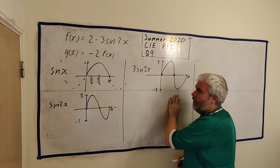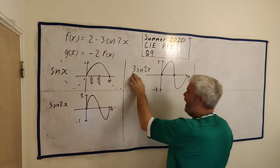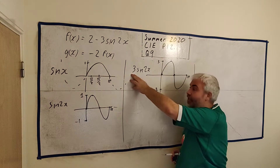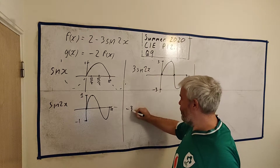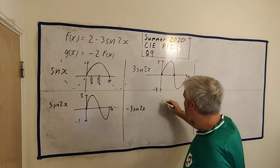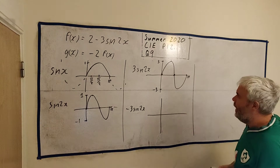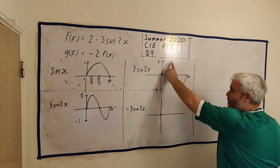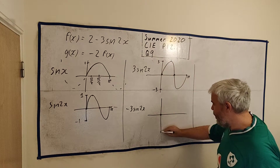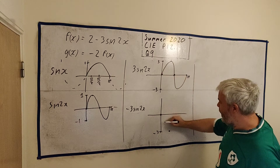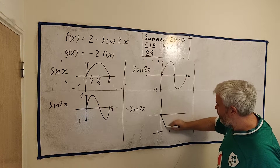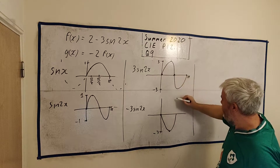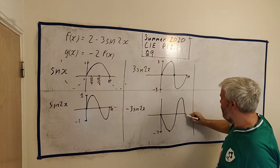Now we're not actually interested in 3sin(2x), we're interested in minus 3sin(2x). 0 multiplied by minus is still 0. Plus 3 multiplied by minus gives minus 3, so that peak goes down. What was at plus 3 is now at minus 3, what was at minus 3 is now at plus 3 — we get an upside-down shape. This is still between 3 and minus 3, just flipped.